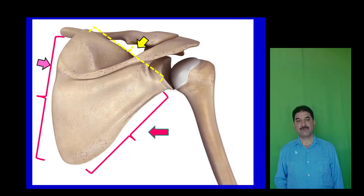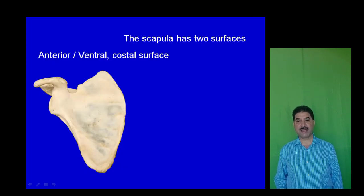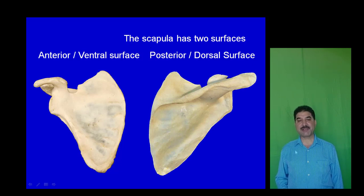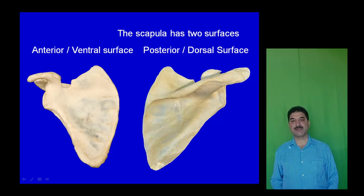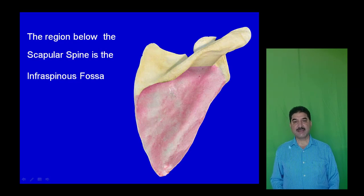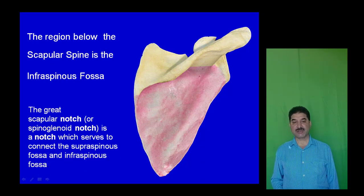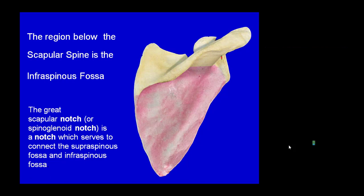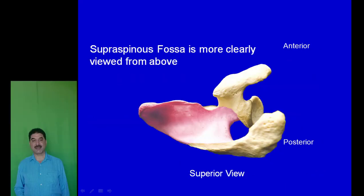The scapula has two surfaces: the ventral surface, also called the anterior surface, and the dorsal surface, identified by the presence of the spine. The dorsal surface is divided by the spine into supraspinous and infraspinous fossae. The region above the spine is called supraspinous fossa, best seen when viewing the scapula from above.